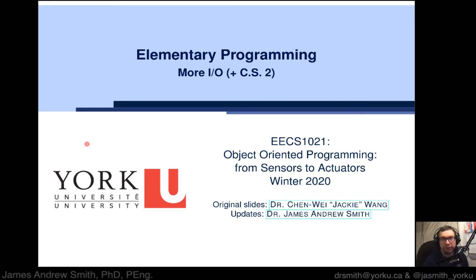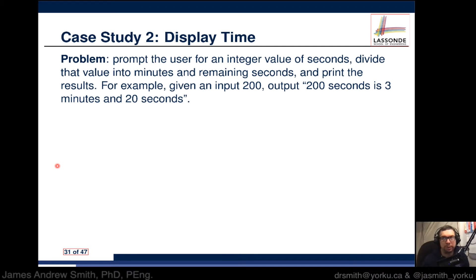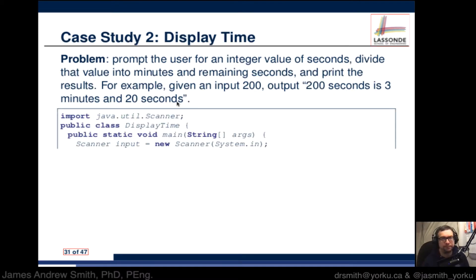Hi everyone. Today we're doing the fourth video in our series on elementary programming for Java, this one on input and output. Here's a case study: we want to display time using a Java program. We prompt the user for an integer value in seconds, divide that value into minutes and remaining seconds, and print the results. For example, given an input of 200, the output should be: '200 seconds is 3 minutes and 20 seconds.'